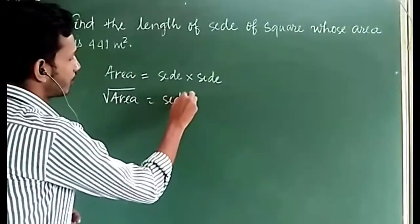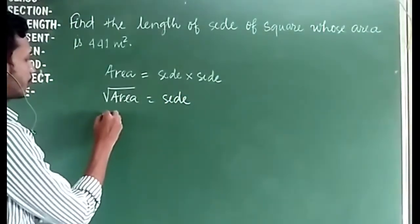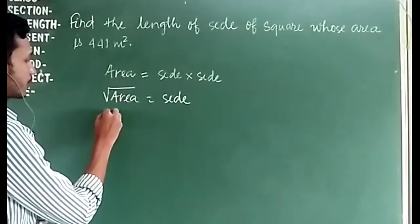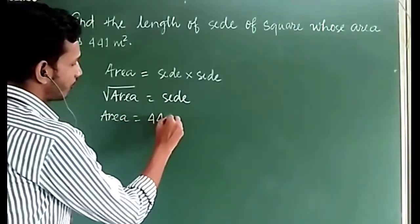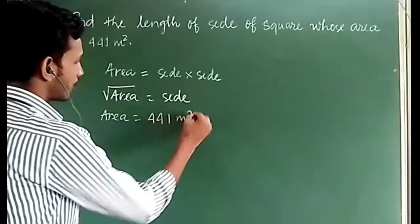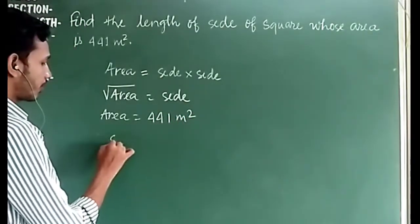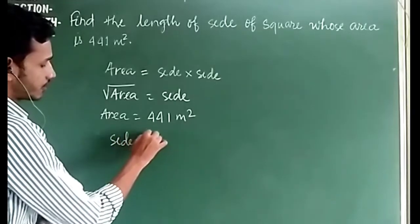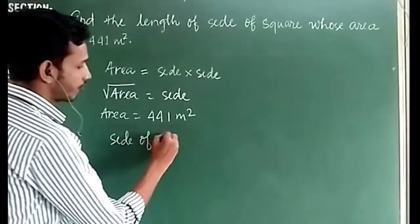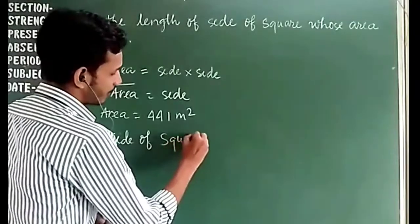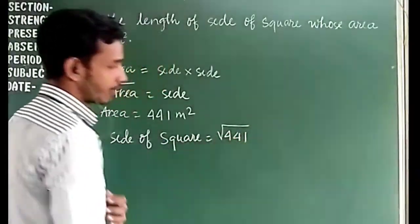The square root of the area will give us the side. Given: area = 441 square meters. So the side of the square will be equal to √441.